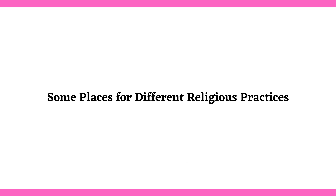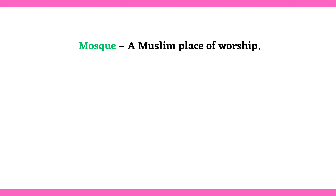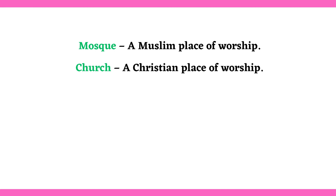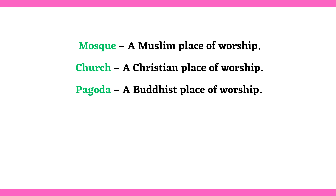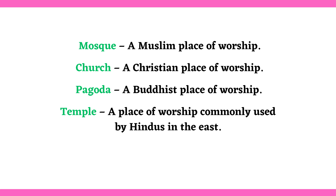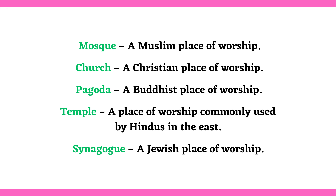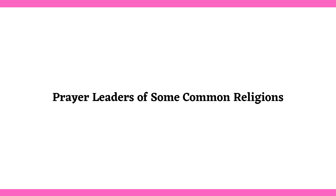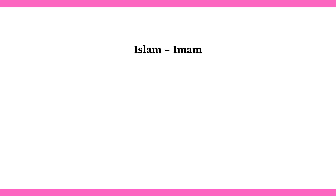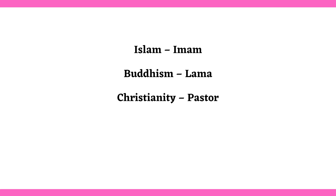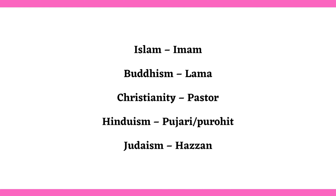Some places for different religious practices: Mosque — a Muslim place of worship. Church — a Christian place of worship. Pagoda — a Buddhist place of worship. Temple — a place of worship commonly used by Hindus in the East. Synagogue — a Jewish place of worship. Prayer leaders of some common religions: Islam — Imam. Buddhism — Lama. Christianity — Pastor. Hinduism — Pujari. Judaism — Hazan.